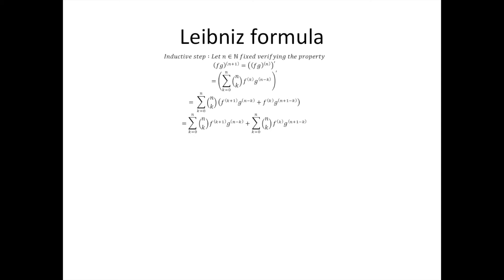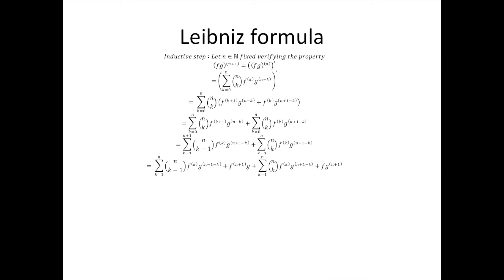This equals the sum from k equal to 1 to n+1, plus the sum from k equal to 0 to n of n choose k, times the kth derivative of f, times the (n+1 minus k)th derivative of j. And this equals the sum from k equal to 1 to n of n choose (k minus 1), times the kth derivative of f, times the (n minus 1 minus k)th derivative of j.